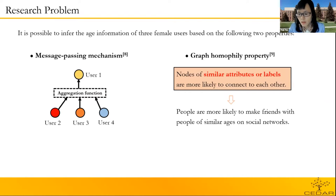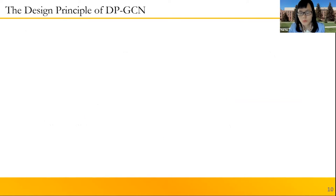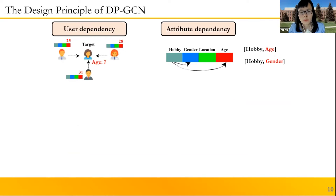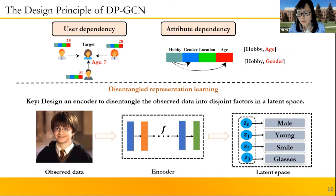Our research problem is how to protect a private user's sensitive attributes in GNNs. To address this problem, we propose a privacy-preserving graph convolutional network. We confront two challenges: user dependency and attribute dependency. To address these two challenges, we propose to learn a disentangled representation for each user in a graph. The basic idea of disentangled representation learning is to disentangle the observed data into different disjoint factors in a latent space.